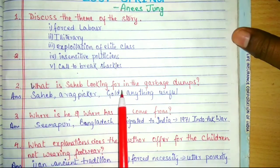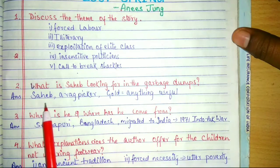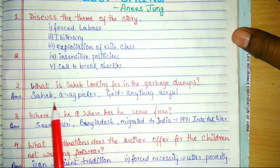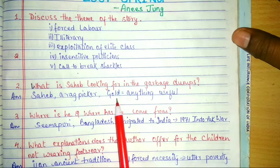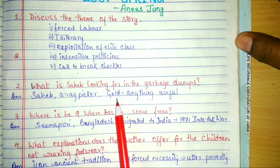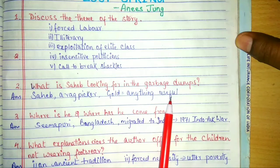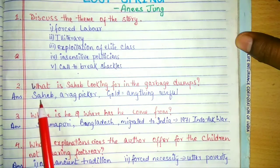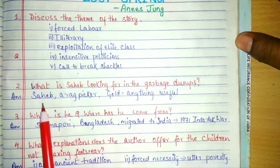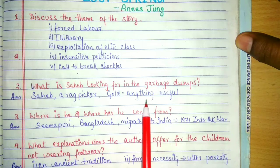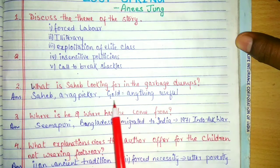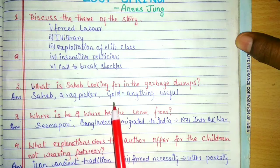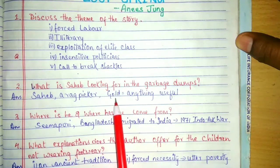What is Sahib looking for in the garbage dumps? It is Sahib, a rag picker, who is looking out for gold. But here gold does not mean literal gold from a jewelry shop. It means anything useful, because Sahib Alam was poor, and if he finds anything useful which he can sell for money, then it is going to be as valuable as gold.